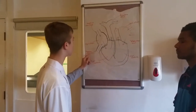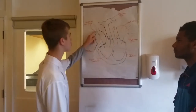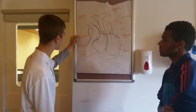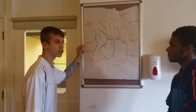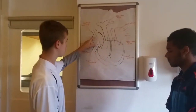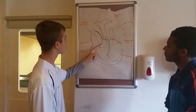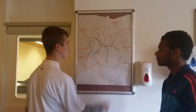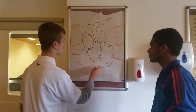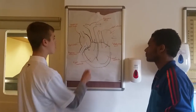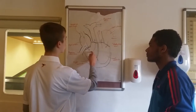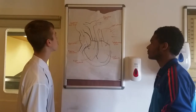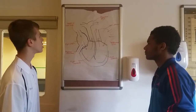First of all, the deoxygenated blood enters via the superior vena cava and the inferior vena cava into the right atrium. Then after it's been transported into the right atrium, it travels down through the tricuspid valve into the right ventricle. These are the muscles and they pump the blood through the right ventricle into the pulmonary valve, where it's therefore transported through the pulmonary artery and into the lungs.